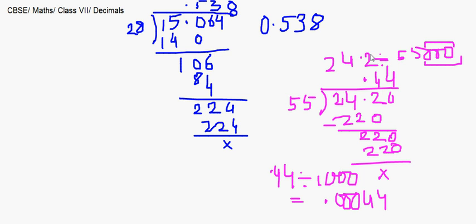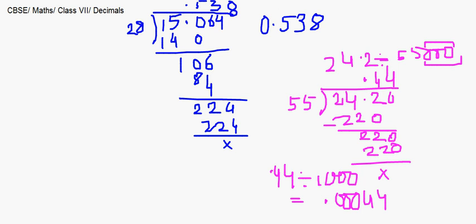This is a shorter way of doing divisions when the divisor has multiple trailing zeros — reduce the division first, then account for the zeros by shifting the decimal. That completes dividing a decimal number by a whole number.